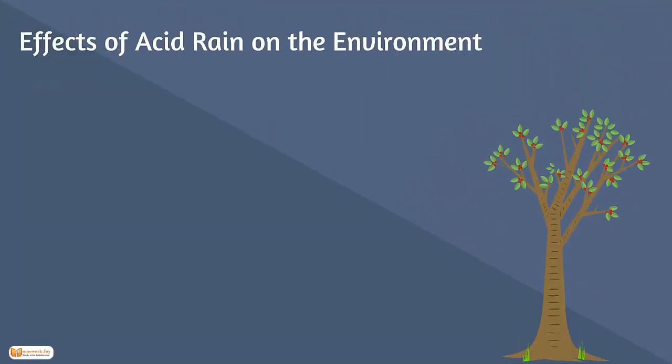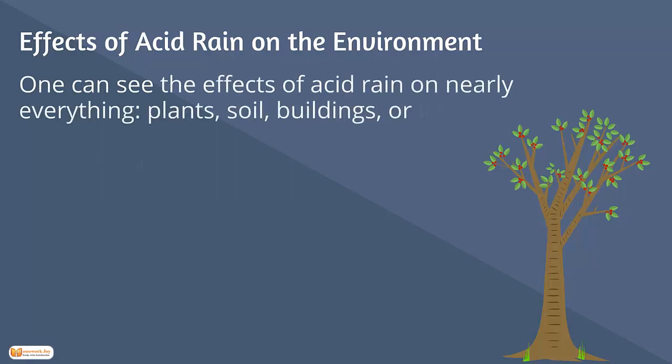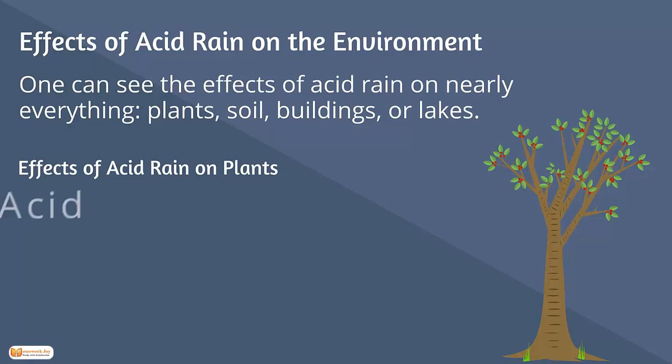Effects of acid rain on the environment. One can see the effects of acid rain on nearly everything — plants, soil, buildings, or lakes.